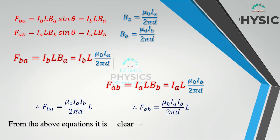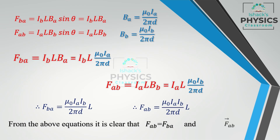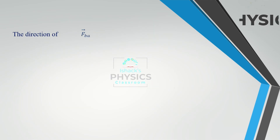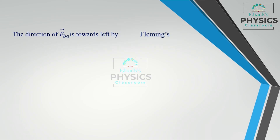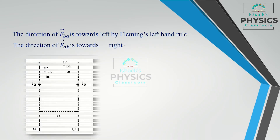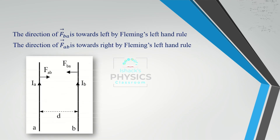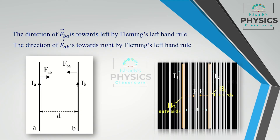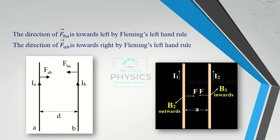These two forces are equal in magnitude: FAB = FBA, but FAB = −FBA, meaning they are equal and opposite. By Fleming's left-hand rule, the direction of FBA is towards the left and the direction of FAB is towards the right.